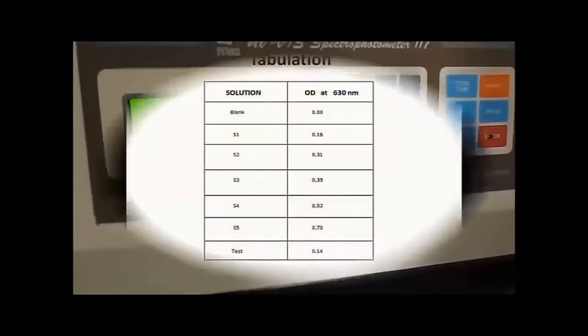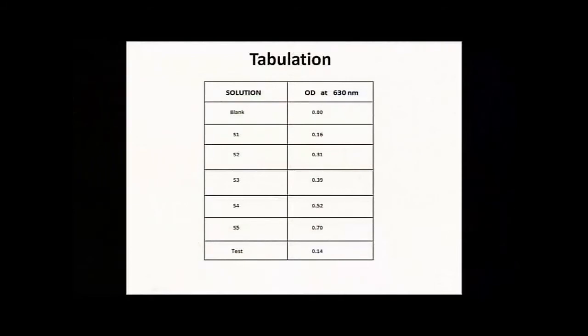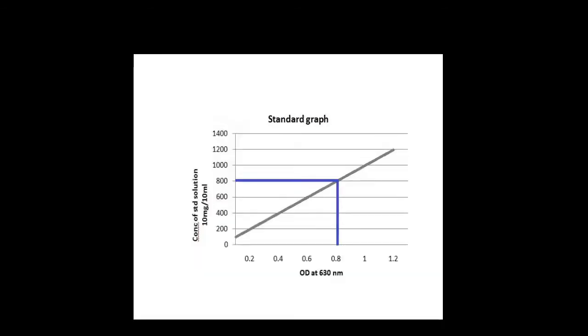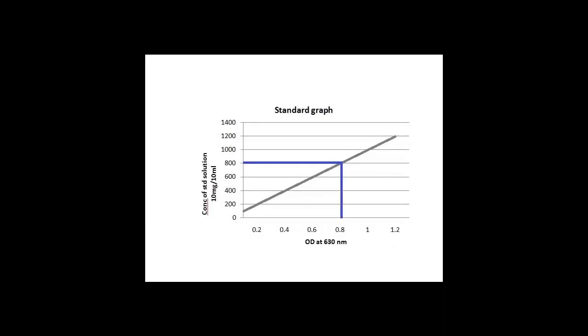The OD values are taken and then it is tabulated and the standard graph is plotted by taking OD value at 630 nm at x-axis and the concentration of standard at y-axis. Total sugar content in 250 gram maize grain sample is 9 mg per 100 ml.